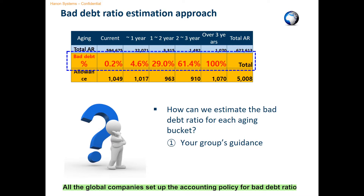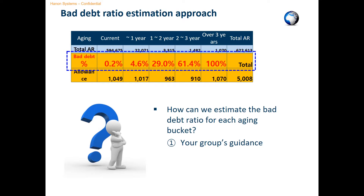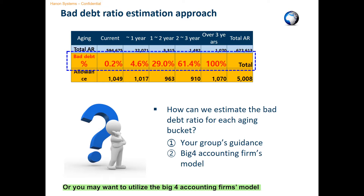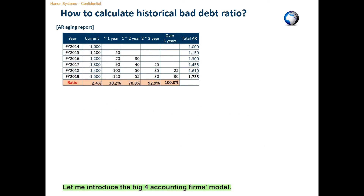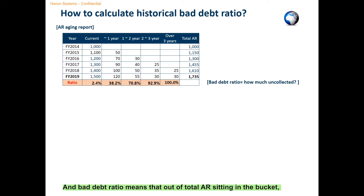All global companies adopt an accounting policy for the bad debt ratio based on their historical experience. You are required to follow the guidance on the ratio provided by your parent company, or you may want to utilize the Big Four Accounting Firms Model to develop your own. The purpose of the Big Four model is to understand how we can estimate the bad debt ratio for each aging bucket — meaning, out of total AR sitting in the bucket, how much was uncollected eventually.